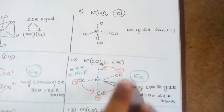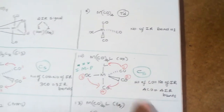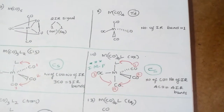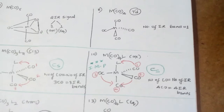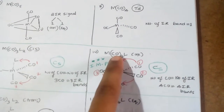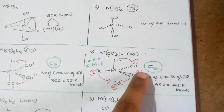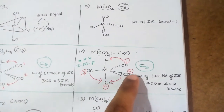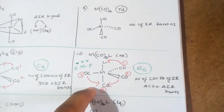For MCO4L axial, it's also Cs. Number of CO equals number of IR bands. Four CO groups are there, giving four IR bands. This CO gives one signal, this CO is two, this CO and this CO — all four are in a different environment. Therefore, they give four IR bands.